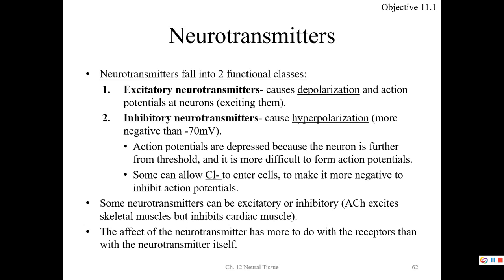Neurotransmitters can be excitatory, inhibitory, or either one depending on context. A single neurotransmitter like acetylcholine could be stimulatory or inhibitory depending on what receptor it binds to. Excitatory neurotransmitters depolarize cells and cause action potentials. Inhibitory neurotransmitters hyperpolarize and suppress cells, making it more difficult for action potentials to form — for example, allowing chloride to enter the cell to make it more negative.